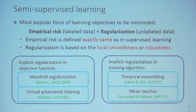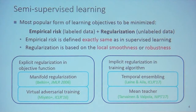Robustness can be, for example, against perturbation around each point. By regularization, I don't mean we must use regularization in the objective function explicitly. We can have some implicit regularization such as temporal ensembling and the mean teacher from the semi-supervised learning literature. The mean teacher is currently a state-of-the-art method in semi-supervised learning.